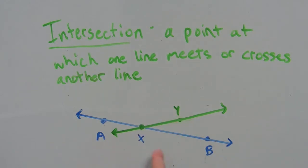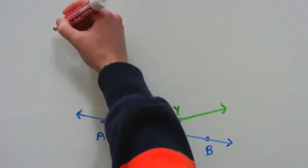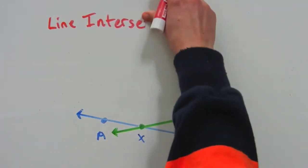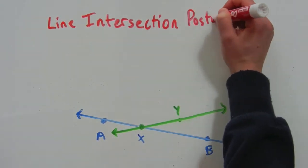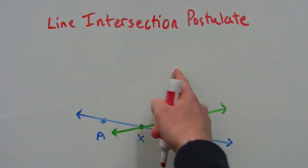As you can see, the intersection occurs at point X. And this leads us directly into our next postulate.